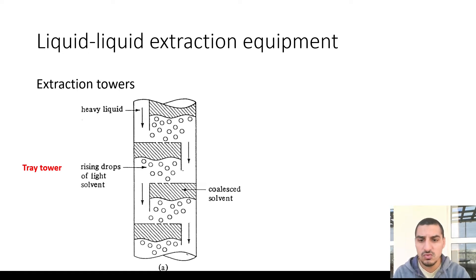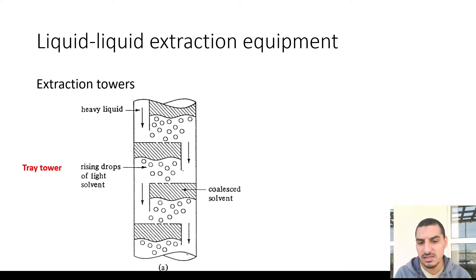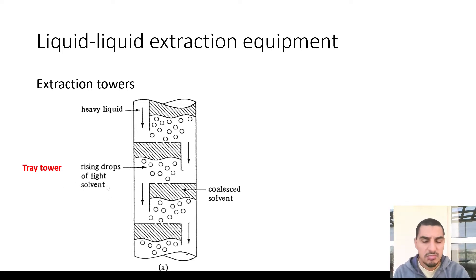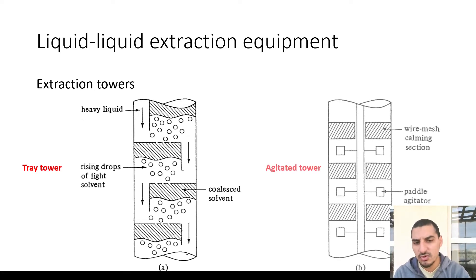It's important to determine which liquid is routed from the top and which from the bottom. There is no fixed rule that the solvent is always from the top or bottom — it depends on the densities. The heavier, more dense liquid goes from top to bottom, and the less dense liquid flows from bottom to top. In most cases the dense liquid is the feed and the less dense is the solvent, which is why it's labeled as the light solvent. But this is not always the case.